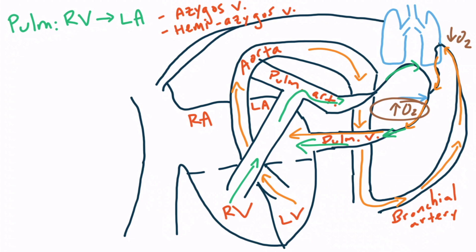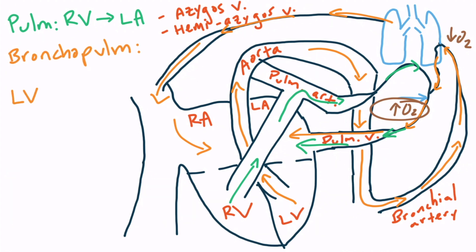It's also important to know that a small portion of blood from the bronchial arteries can actually return to the right atrium by traveling through the azygous and hemiazygous veins. This is why the bronchopulmonary circulation is supplied by blood from the left ventricle and mostly empties into the left atrium — as you can see, some of it goes back to the right atrium. So the bronchopulmonary circulation empties into both the left atrium and the right atrium, but keep in mind that most of the blood empties into the left atrium.